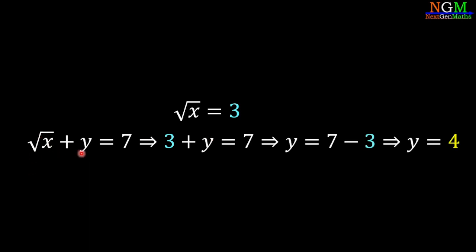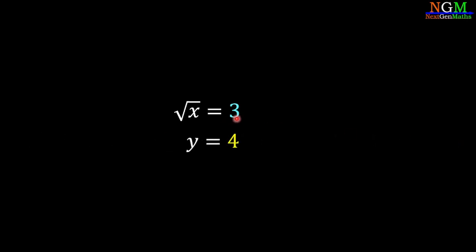We were given that root x plus y equals 7, so substituting root x equals 3 gives 3 plus y equals 7, therefore y equals 4. We now have root x equals 3 and y equals 4. Squaring both sides of the first equation gives x equals 9.